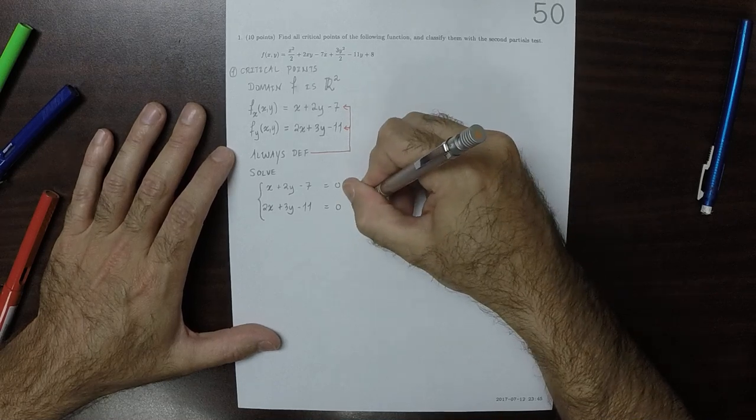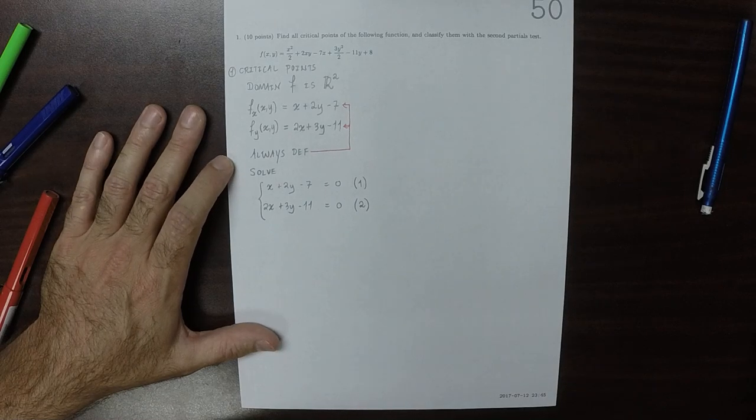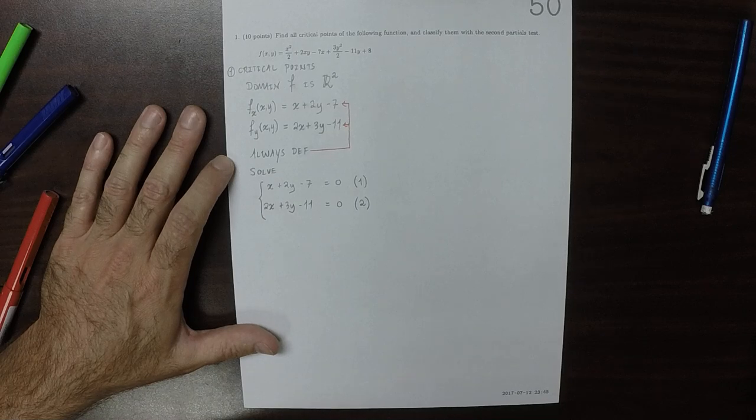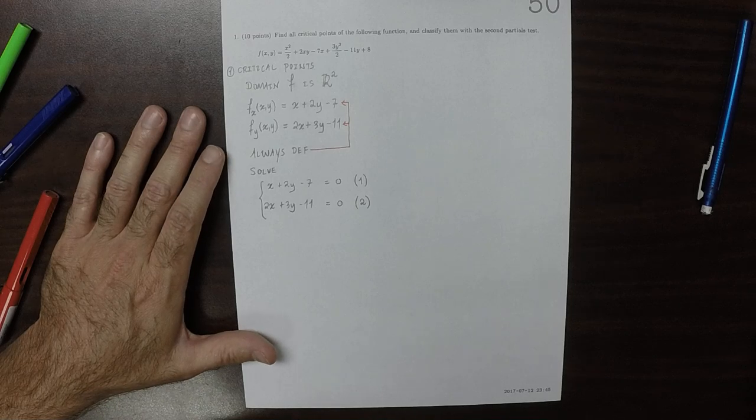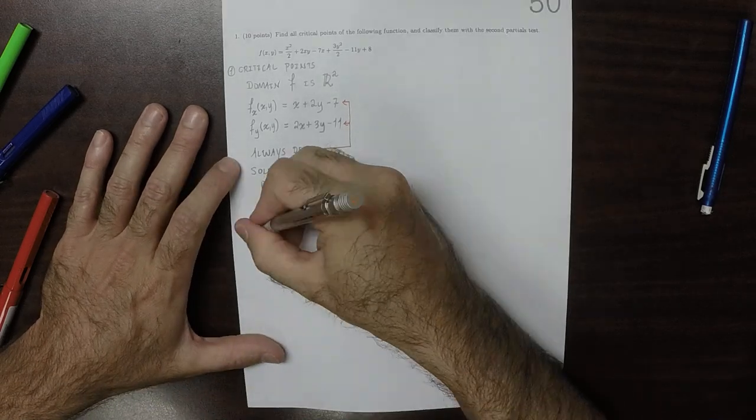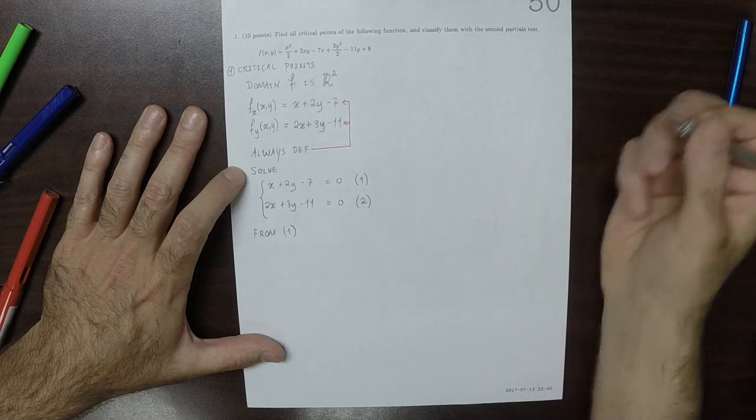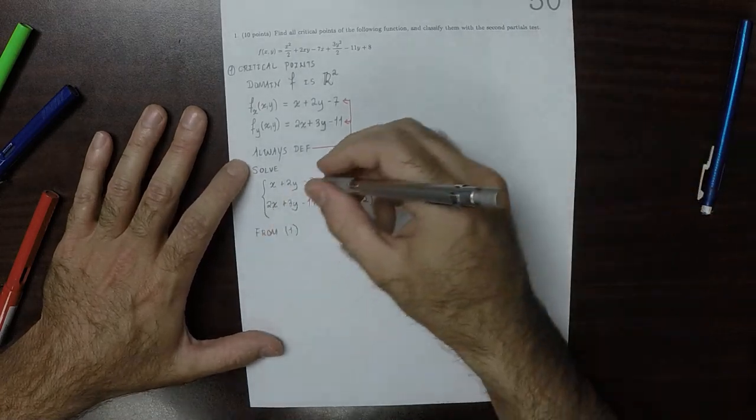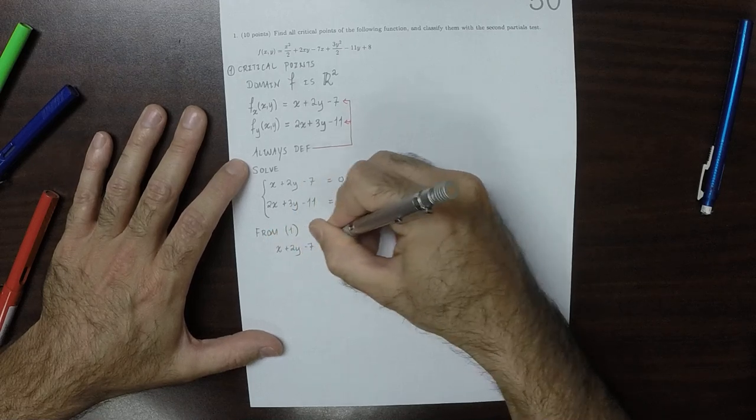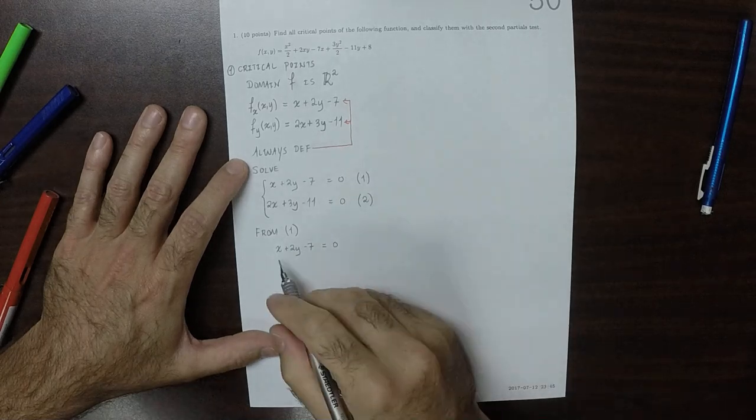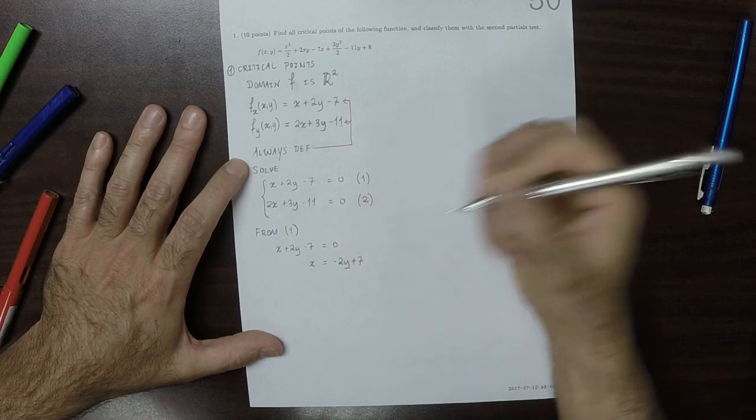I'll call that equation 1 and that equation 2. We can do this in a variety of ways. From equation 1, I'll solve for x as follows: x plus 2y minus 7 equal to 0. That's equation 1. I'll move all the other stuff to the other side. So there we have x as negative 2y plus 7.